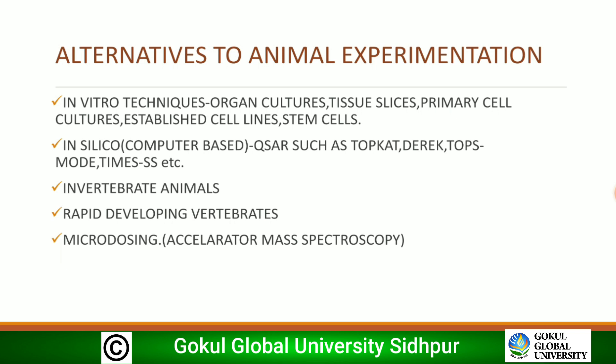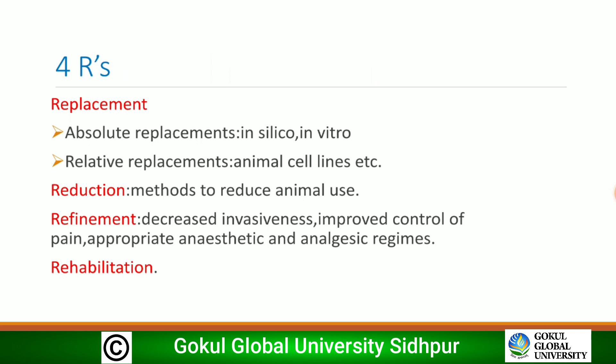Alternatives to animal experimentation include in vitro techniques such as organ cultures, tissue slices, primary cell cultures, established cell lines, and stem cells. In silico or computer-based methods such as TOPCAT, DIRECT, TOPSMART, and TIMES can be used. Invertebrate animals, rapidly developing vertebrates, and microdosing using accelerator mass spectroscopy are also options. The four R's are: Replacement (absolute — in silico or in vitro; and relative), Reduction — methods to reduce animal use, Refinement — decreased invasiveness, improved pain control, appropriate anesthetic and analgesia regimes, and Rehabilitation.